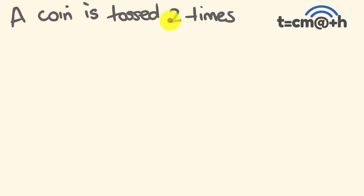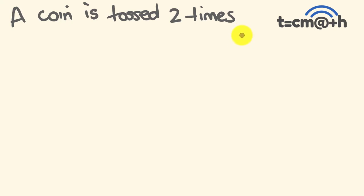I'm going to do this through an example. A coin is tossed two times — tossed once, we get the result, and then it's tossed a second time. We're going to use a tree diagram to illustrate the different possible results we can get. If you throw a coin, you've got two possible outcomes: you can get a head or a tail. It's important to identify the different outcomes when drawing up a tree diagram.